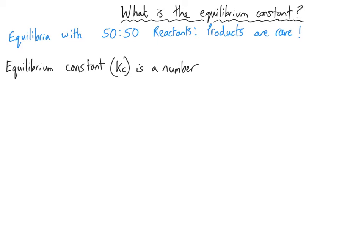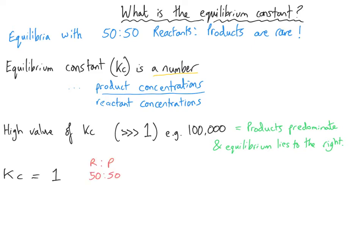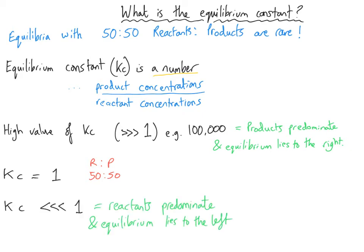The equilibrium constant Kc is a numerical value that indicates the proportion of products compared to reactants. A high value of Kc, significantly greater than one, means that the products are predominating and the equilibrium lies heavily to the right-hand side. A value of one suggests that the equilibrium is a 50-50 relationship. A value of less than one suggests that the reactants are predominating and the equilibrium lies to the left-hand side. So Kc gives you an indication of where the position of equilibrium is.